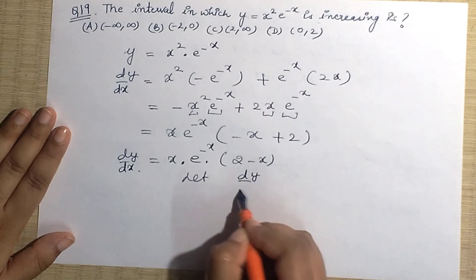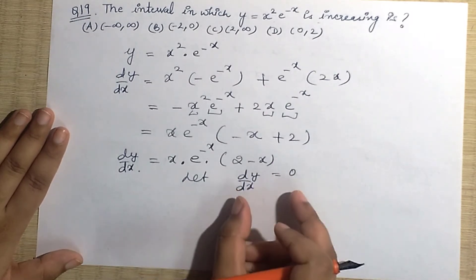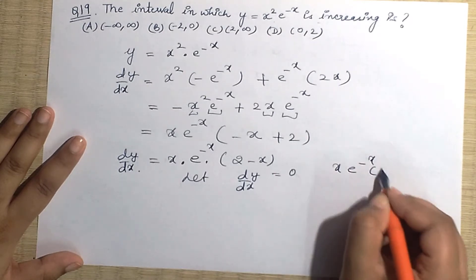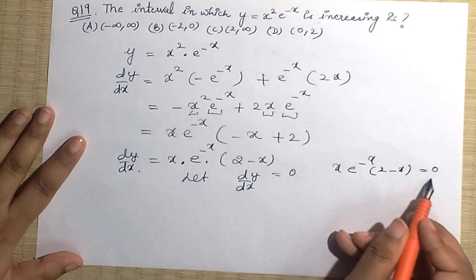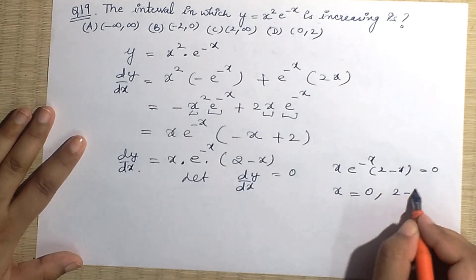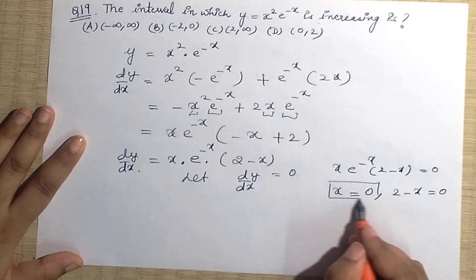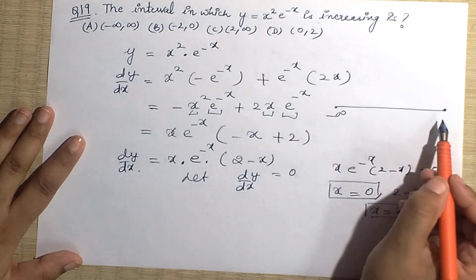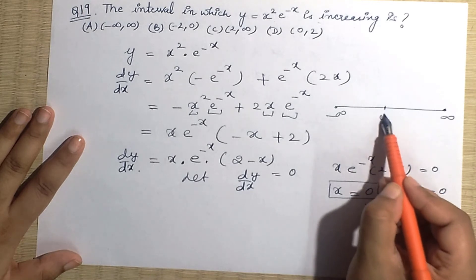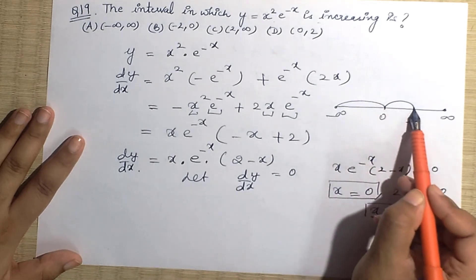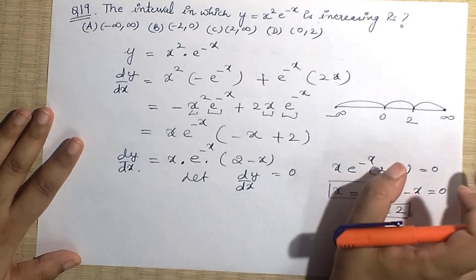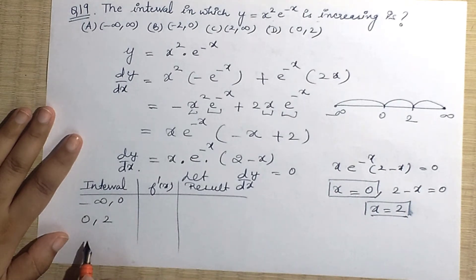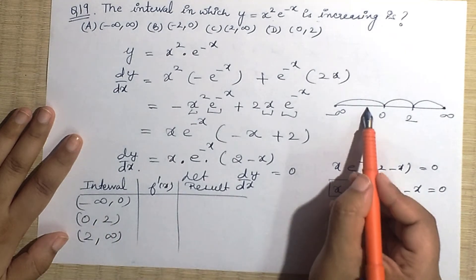Setting f'(x) = 0: either x = 0 or 2 - x = 0, giving x = 2. So we have two critical points: x = 0 and x = 2. On the number line from -∞ to +∞, these create three intervals: (-∞, 0), (0, 2), and (2, +∞). We'll check the sign of f'(x) in each interval.